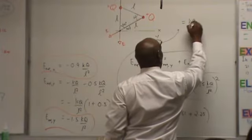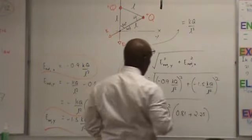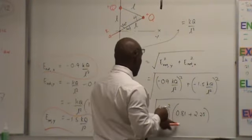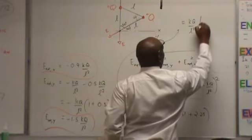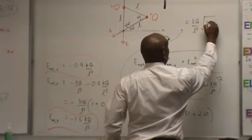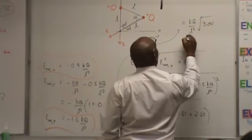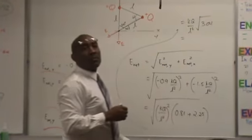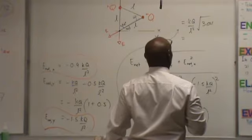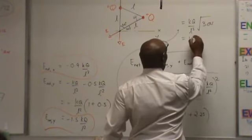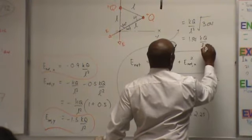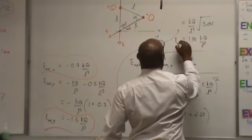They're going to give me K Q over L square for this. Time. Square root of... square root of what? Square root of 3.04.